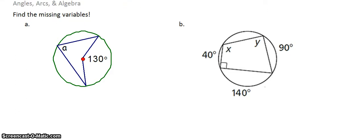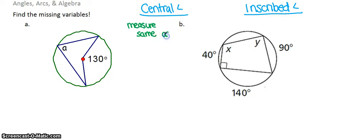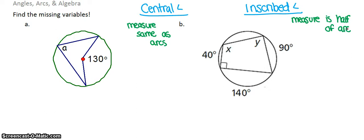A reminder of what we learned yesterday: we learned theorems about central and inscribed angles and the arcs that intercept them. Central angles have a measure the same as their intercepted arc. Inscribed angles have a measure that is half of the intercepted arc. You should have those definitions formally in your notes already.